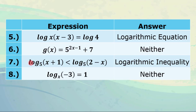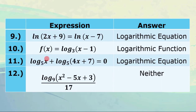For number 7, log of x plus 1 to the base 5 is less than log of 2 minus x to the base 5 — logarithmic inequality because of the less than symbol. For number 8, log of negative 3 to the base x equals 1. This is not a logarithmic equation, logarithmic inequality, or logarithmic function, so the answer is neither. For number 9, ln or natural logarithm of quantity 2x plus 9 equals ln of quantity x minus 7 — logarithmic equation. Number 10, f of x equals log of quantity x minus 1 to the base 3 — logarithmic function.